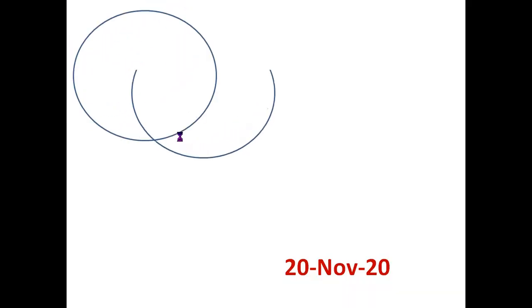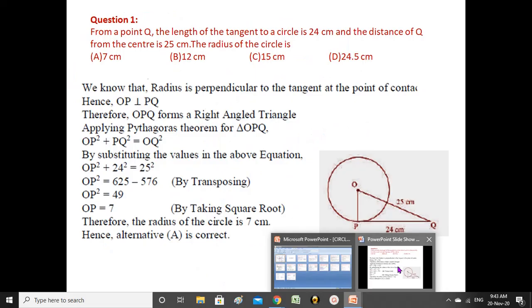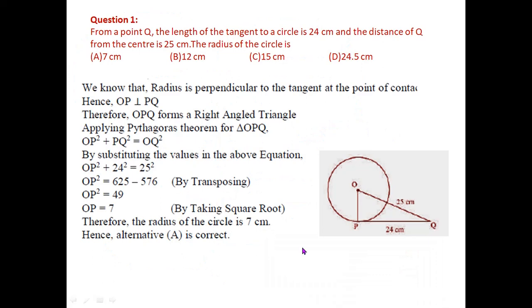This is part two of the circles lesson. Question number one: from a point Q, the length of the tangent to a circle is 24 centimeters and the distance of Q from the center is 25 centimeters. Find the radius of the circle.